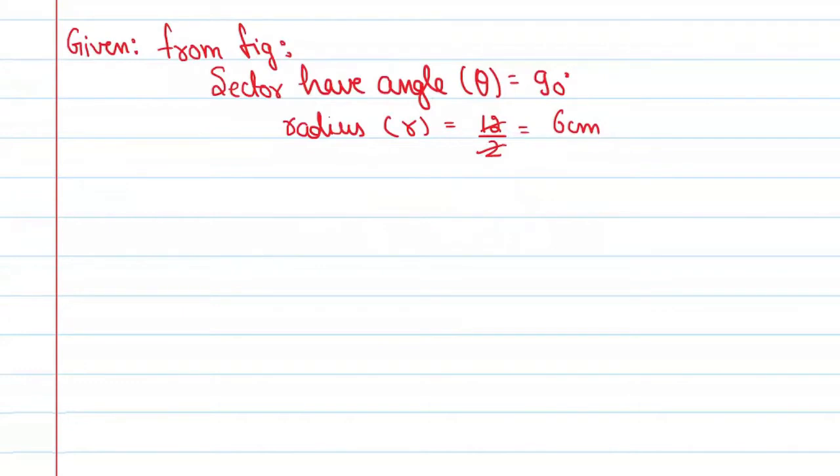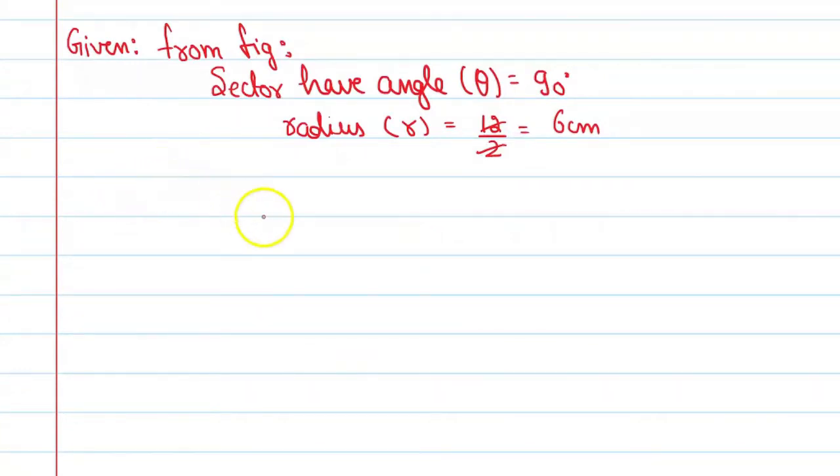Now, next is side of the square. Here, say it is small a, it is equal to 12 cm. Now, let's start our solution.